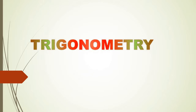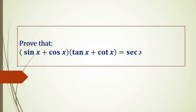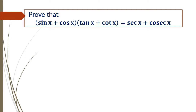Trigonometry. Prove that (sin x + cos x)(tan x + cot x) = sec x + cosec x.